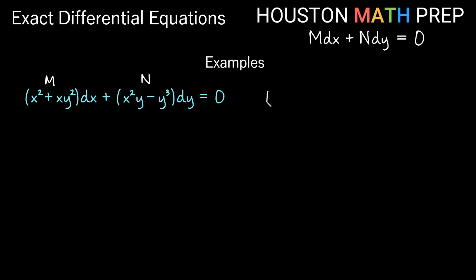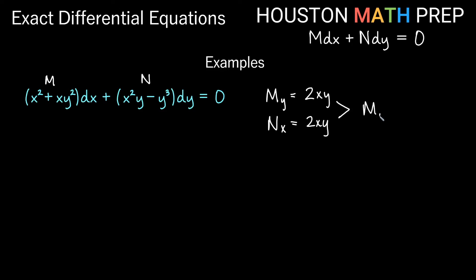Let's check: what is the partial derivative of M with respect to y? We treat x as a constant, so the x² term gives zero. Taking the derivative of xy², thinking of x as a constant multiple, the two comes out front and we get 2xy. Now the partial derivative of N with respect to x: taking the derivative of x²y with respect to x, treating y as the constant, gives 2xy. The derivative of y³ with respect to x is zero since y³ is a constant. These are equal, so ∂M/∂y equals ∂N/∂x, and this is in fact an exact equation.